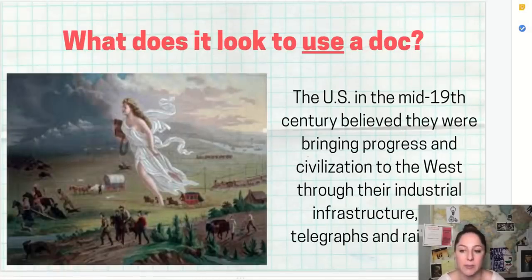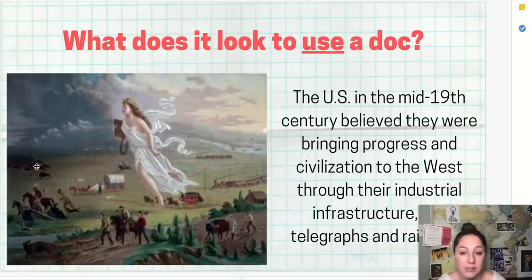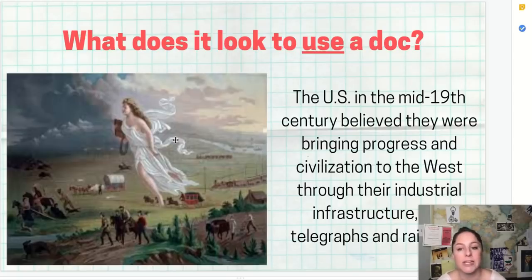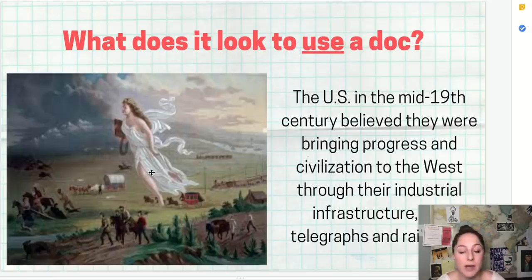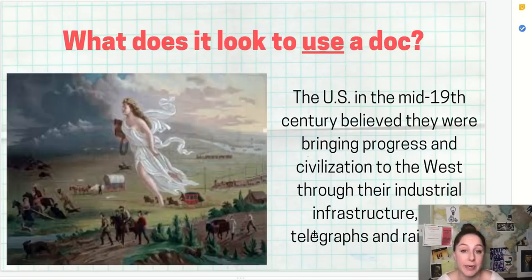What it looks like to actually use this document would be to say something like 'the United States in the mid-19th century believed they were bringing progress and civilization to the West through their industrial infrastructure, like telegraphs and railroads.' That shows you understand the real point of the painting — it's about the American belief in manifest destiny, their belief that they're bringing all these positive things to the West. That really shows you're using a document to support a claim you're making about history.